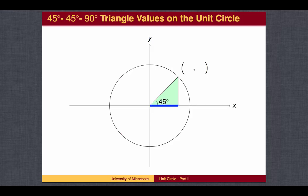At 45 degrees, we are in the first quadrant, so both the x-coordinate and the y-coordinate are positive — that is, both cosine of 45 degrees and sine of 45 degrees are positive. Since the leg along the x-axis, which measures the x-distance from the origin and therefore is the x-coordinate, has length square root of 2 over 2, the cosine of 45 degrees is the square root of 2 over 2. Similarly, the height of the triangle is the square root of 2 over 2, so the sine of 45 degrees is the square root of 2 over 2.